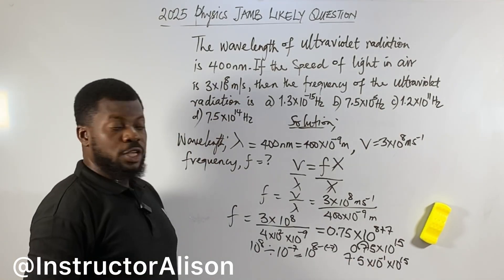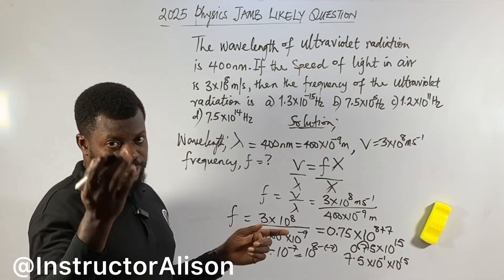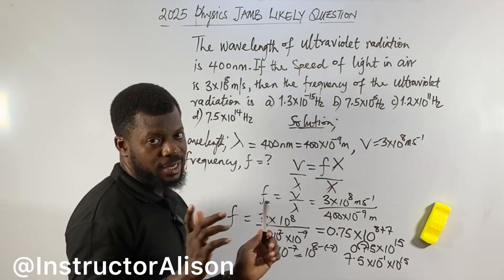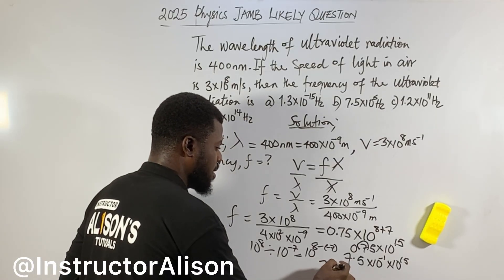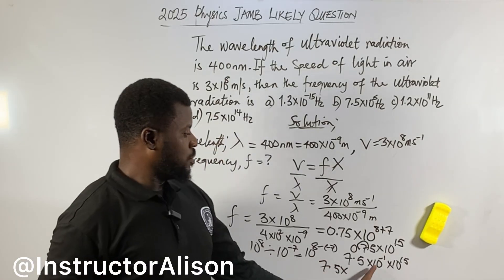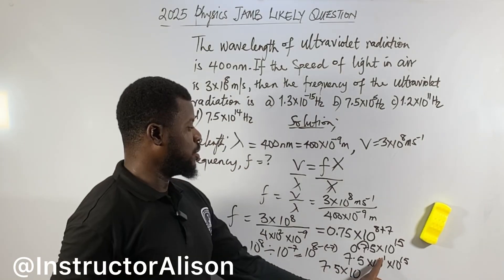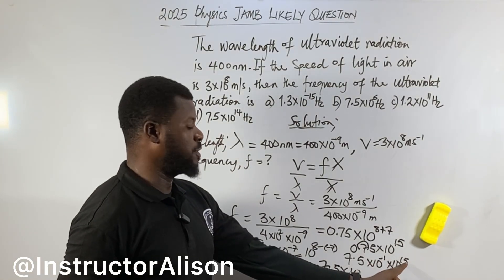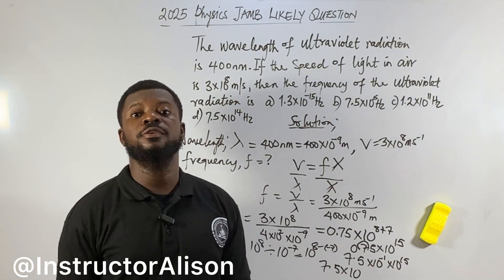This is what they should teach in primary school and secondary school but they don't — so I'm teaching you now. Like this video and share it. Finally we get 7.5 — the bases are the same, take one of the base — minus 1 plus 15 equals 14. So the answer is 7.5 times 10 to the power of 14.